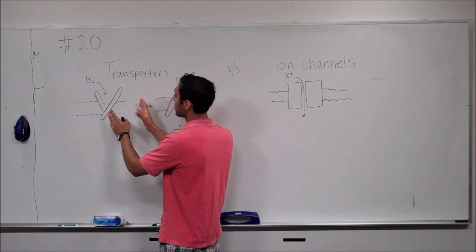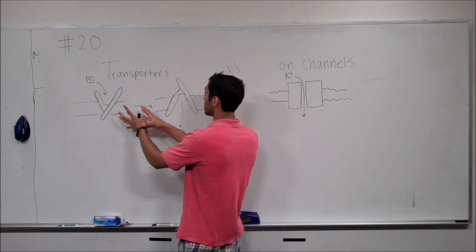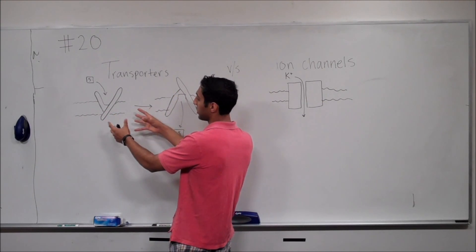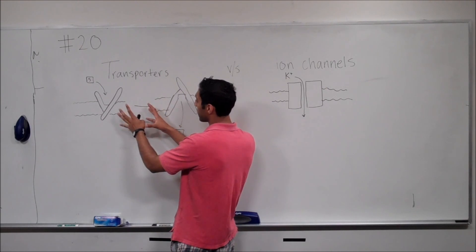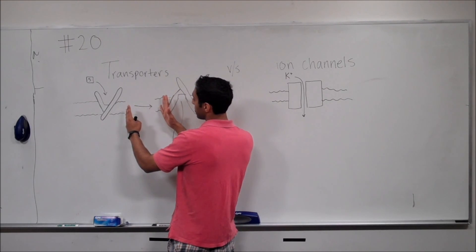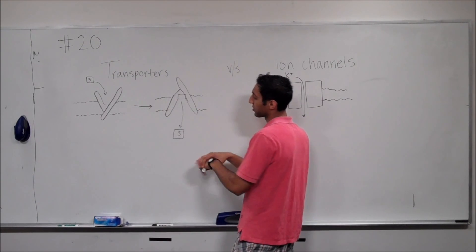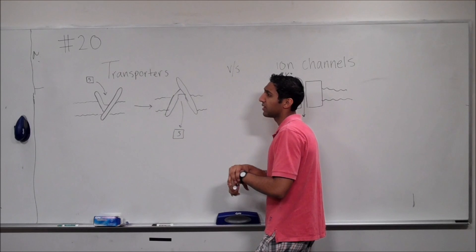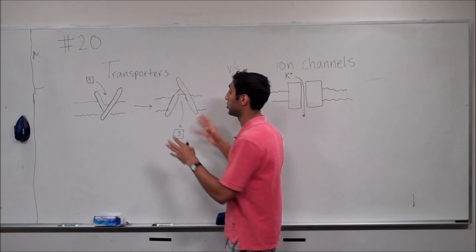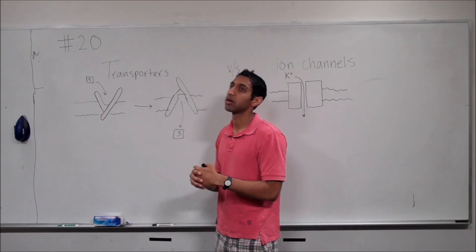And the protein then, either with the induction of ATP or by itself, will contort or change its shape in order to eject it on the other side of the plasma membrane. As you can imagine, cells can use transporters to either import or export substances.